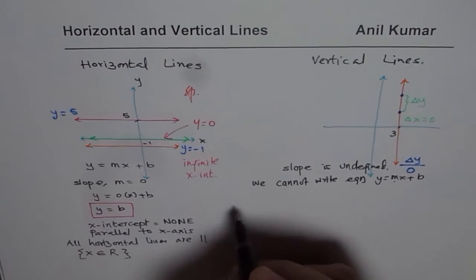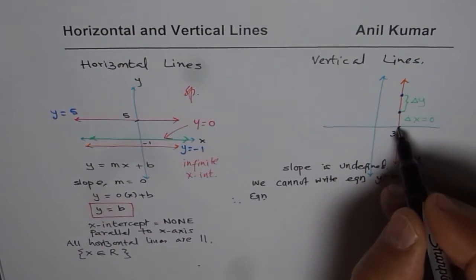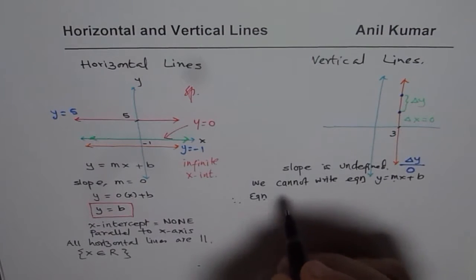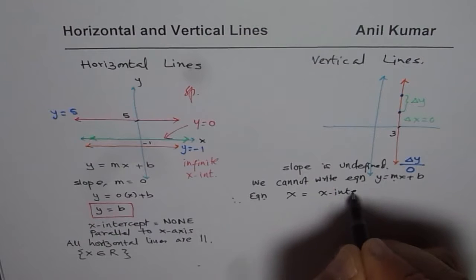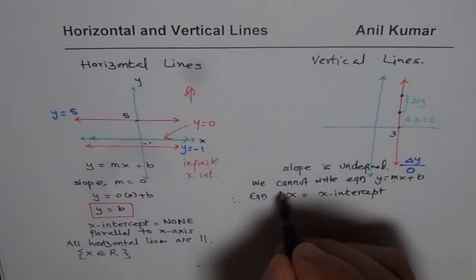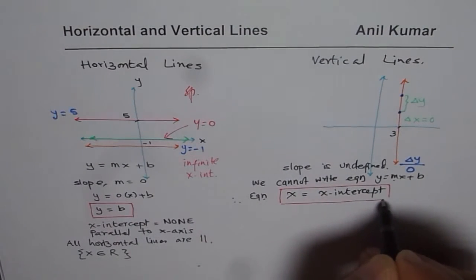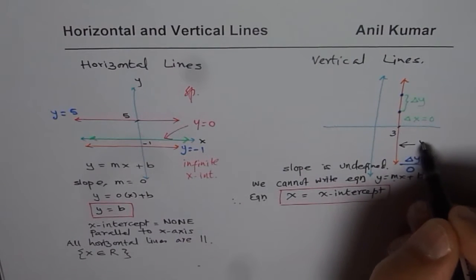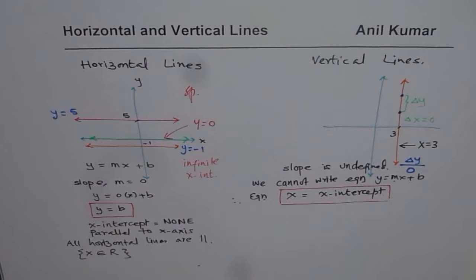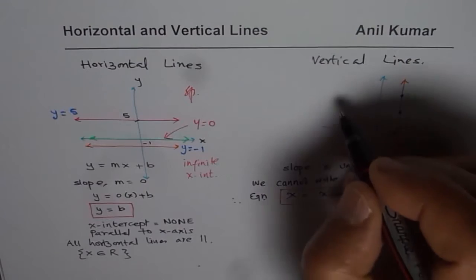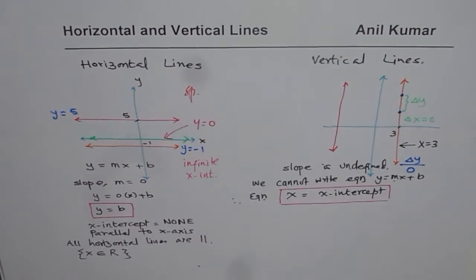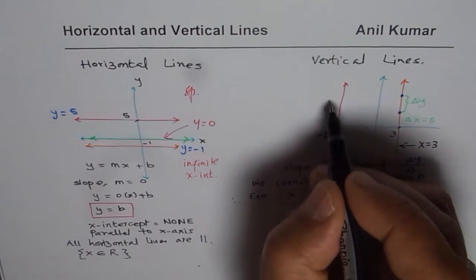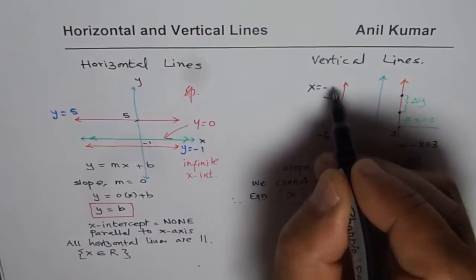So what should be the equation of the line? For each and every point on the line, the x-value is the same. Just as we had y equals to y-intercept as the equation of a horizontal line, here x equals to x-intercept is the general equation of a vertical line. The slope-intercept form cannot represent a vertical line since the slope is undefined. For this line with x-intercept of 3, the equation is x equals to 3. For another vertical line with x-intercept of minus 6, the equation is x equals to minus 6.